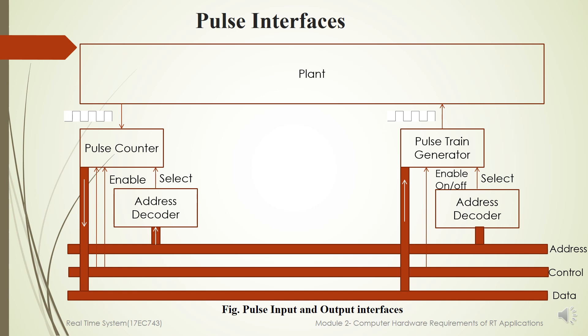PWM, pulse width modulation, is used for speed control of DC motors, digital communication, power electronics, auto intensity control of street lights, and many other applications. For PWM output, a fast PWM stream is produced and later converted into a linear analog output using a low-pass filter.